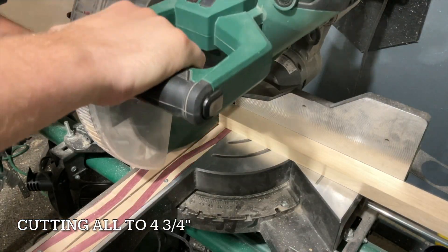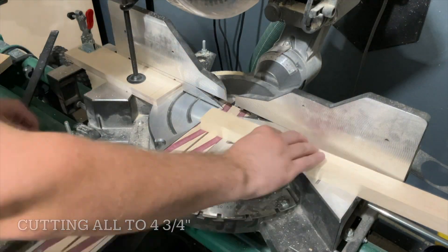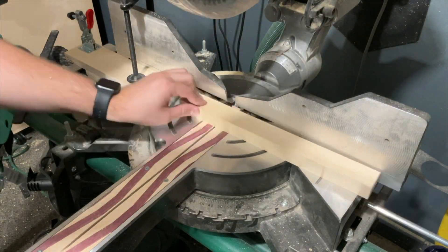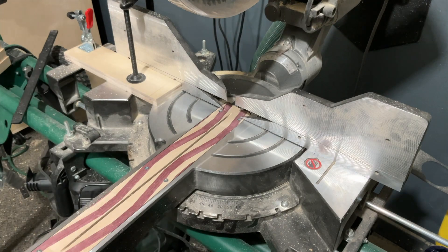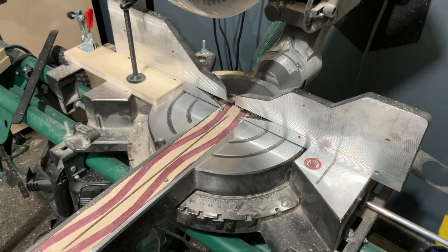The fixed jaw, sliding arm, and clamping plate all have to be cut down to the same length of four and three-quarters inches. This makes it really easy, just set up a stop block, cut through all of them.